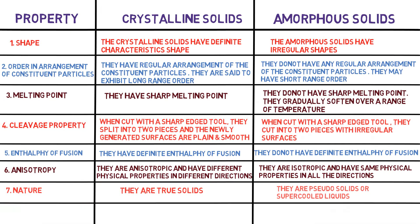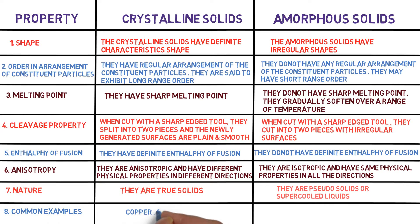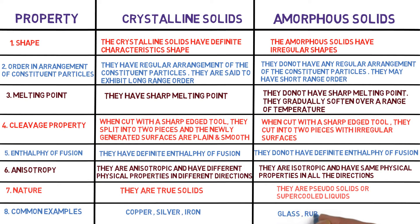Here are some common examples. Copper, silver, and iron are some crystalline solids, whereas glass, rubber, and plastic are some amorphous solids.